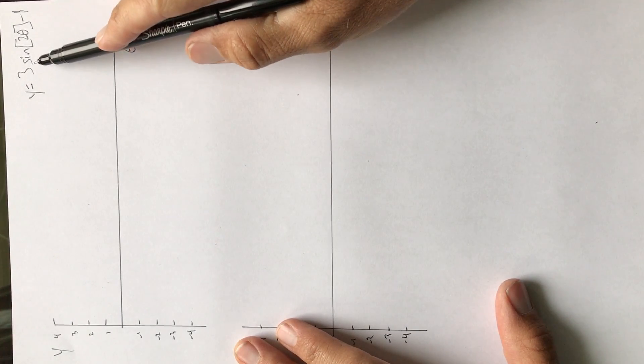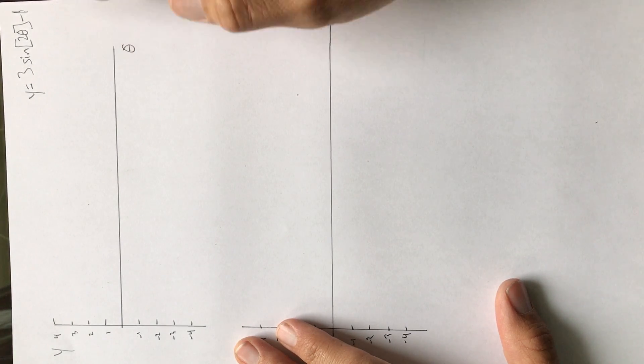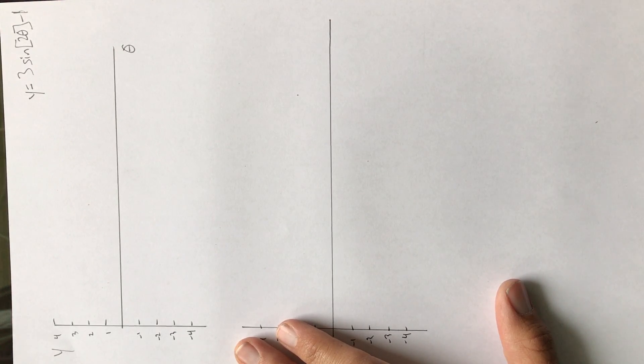Okay, so suppose I want to graph y equals three sine two theta minus one. I'm going to start with this minus one and that tells me where the midline is.